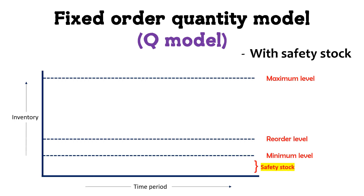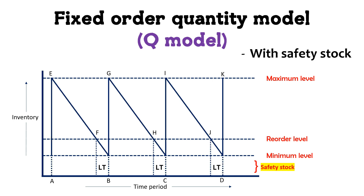In the fixed order quantity model with safety stock, the diagram shows three lines: maximum level, reorder level, and minimum level. Below the minimum level there is a safety stock. Whenever the inventory reaches the minimum level — the reorder point — an order is placed, and a safety stock is always maintained in this model.